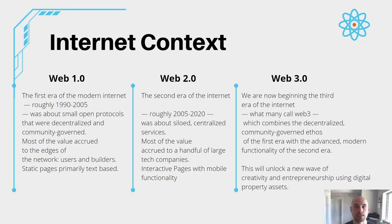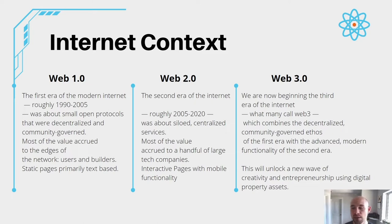Streaming services and social networks became a thing. Web 3.0 — we're now beginning the third era of the internet. It roughly started in 2009 with the creation of Bitcoin. Web 3.0 combines the decentralized, community-governed ethos of the first network era with the advanced modern functionality of the second era, and this will unlock a new wave of creativity and entrepreneurship using digital property assets.